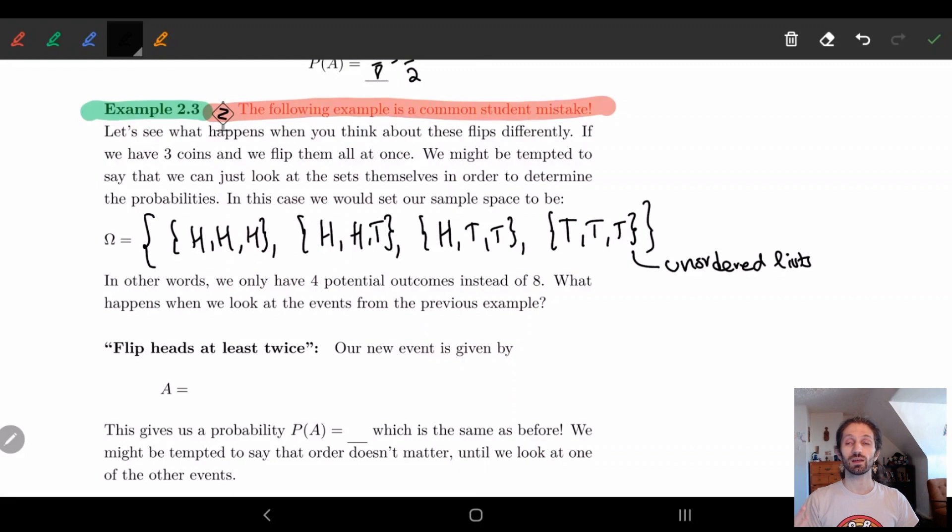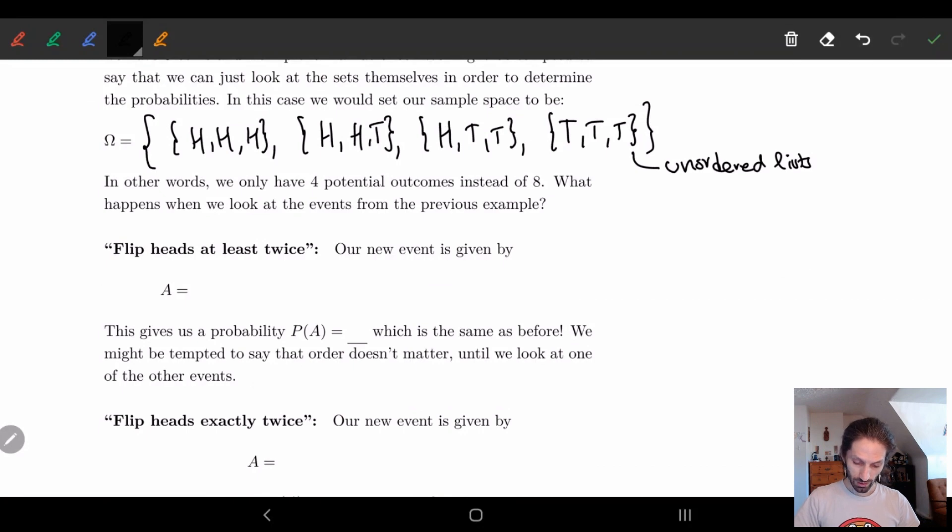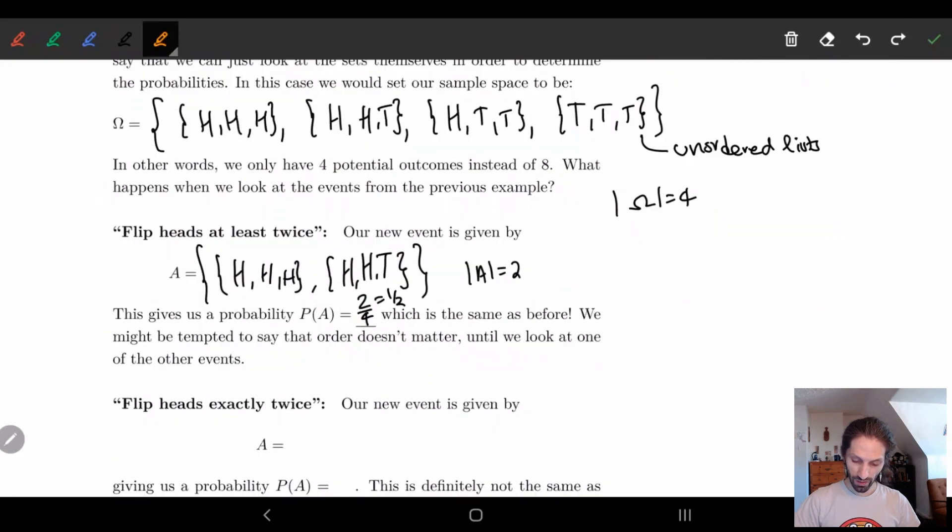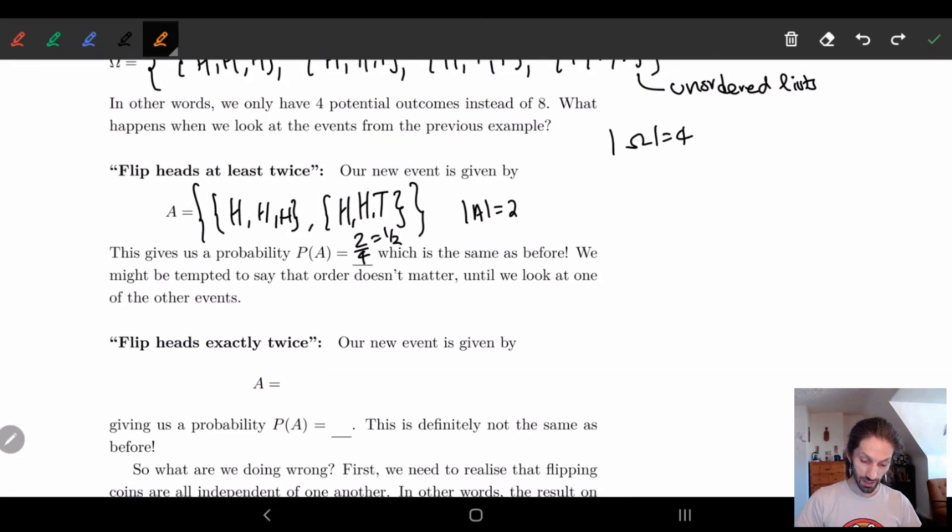So flips heads at least twice. Our new event is going to be given by, well, at least twice. So we have HHH. So this is three heads, and heads, heads, tails. That's at least twice. So in this case, we have two over four. So we have four omega. In this case, we have the size of A is equal to two. So two fourths, which is one half. And if you remember, this is the same as before. So here, we have the same as before. Okay, so if that one didn't change, what happens with the other one?